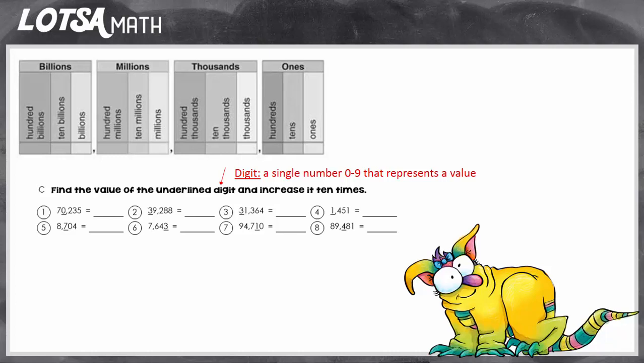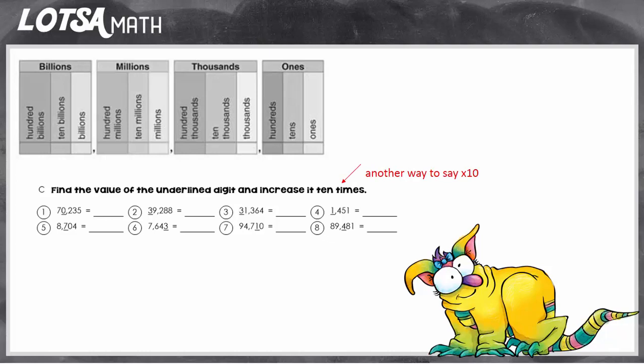So we're finding how much the digit is worth, and then we're increasing it — which means we're going to make the value bigger ten times. It's another way of saying times ten. So for these types of problems, we have to find the value of the underlined digit and then make it ten times bigger. Let's look at some examples.